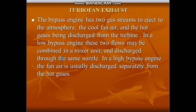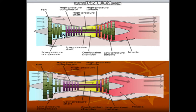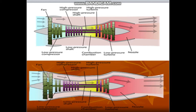In a high bypass engine, the fan air is usually discharged separately from the hot gases. Looking at this figure, we can see the high bypass configuration. The air enters the engine and separates — one stream goes through the bypass, and the other enters the core of the engine to assist combustion, turn the turbine, and exit through the exhaust system. The bypass air does not mix with the core exhaust air; they go separately to the atmosphere.